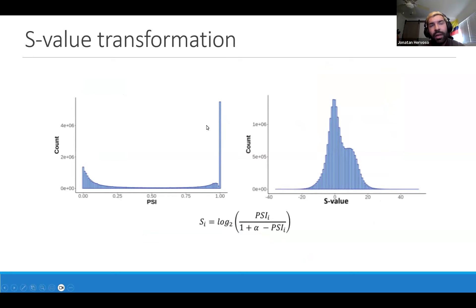The reason for this is there are a lot of constitutive exons, which will have a PSI value of 1 because they're always included in the transcript population. There are also alternative exons that will never be included, depending on the tissue or disease you're looking at, which is why you also have a lot of values around 0.